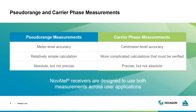Conversely, carrier phase measurements are highly precise, but typically need additional infrastructure to resolve ambiguities. For this reason, carrier phase calculations are often used to calculate positioning in a specific region or area, like a farmer's field. Use of these measurements depends on your specific application, but NovaTel receivers are designed to process both calculations and are flexible across user applications.